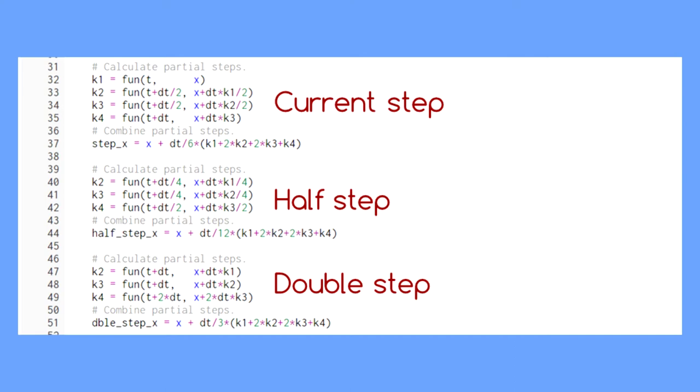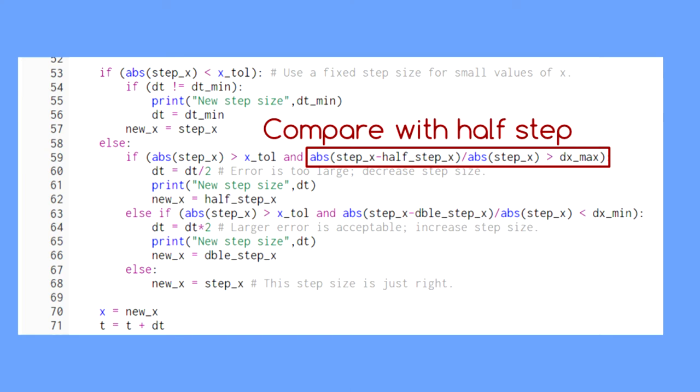In line 59, we compare the difference between the original step and the half step. If the relative difference between them is too large, we cut the step size in half and use the half step value.